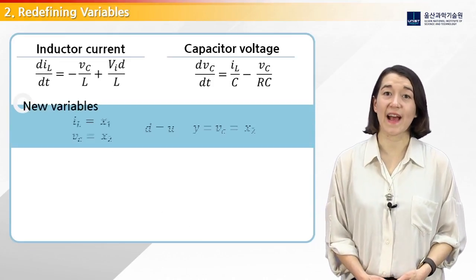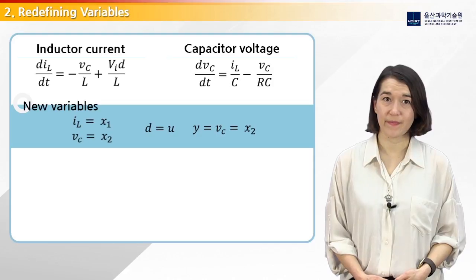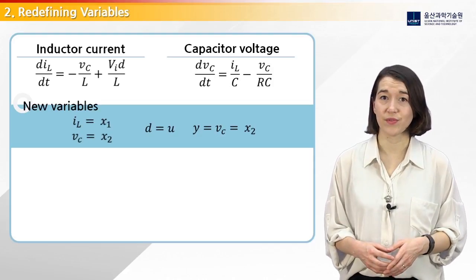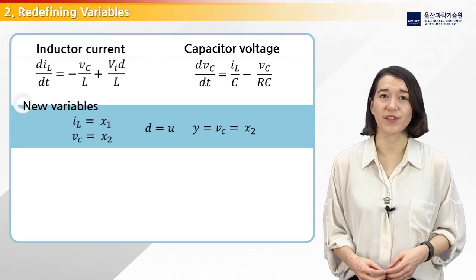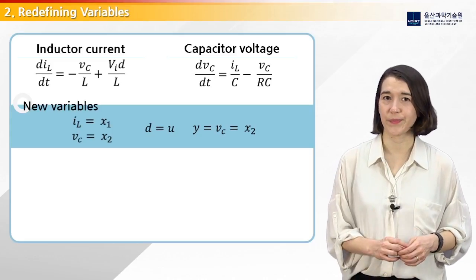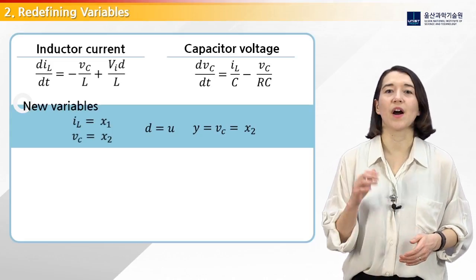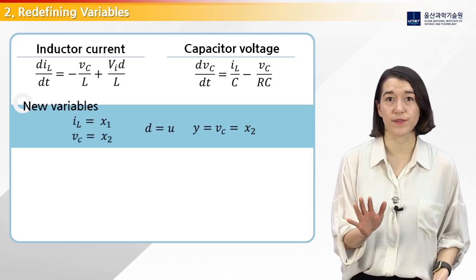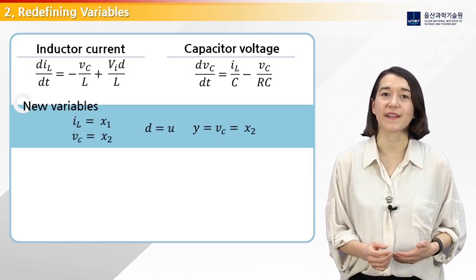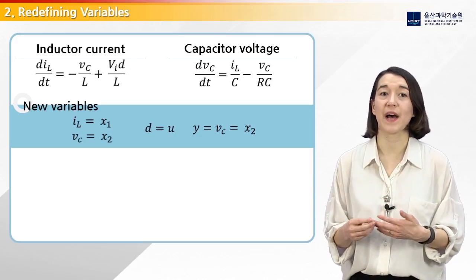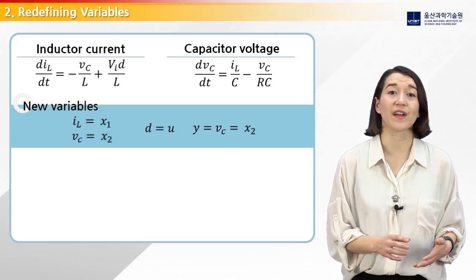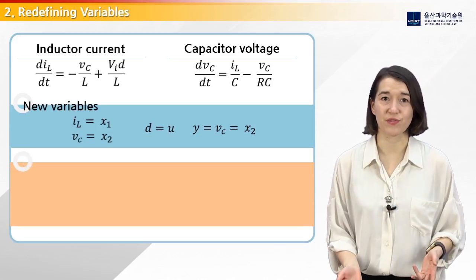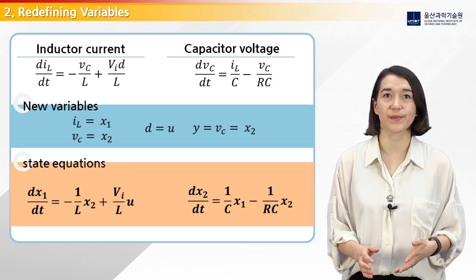The inductor current is x1. The capacitor voltage state is x2. Then the duty ratio d is the input u. Our objective is to control the output voltage of 5 volts, so our output y is the output capacitor voltage, which is now x2. Here are the equations rewritten with the new variables.